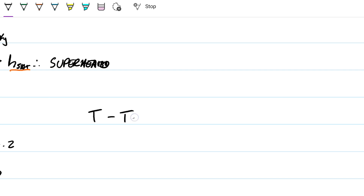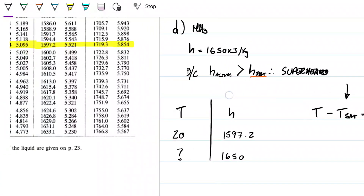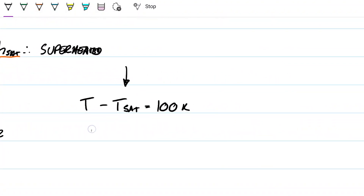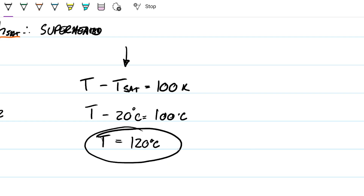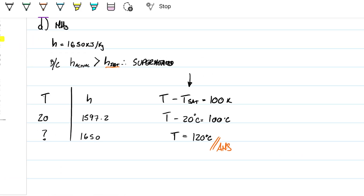So T minus T_sat equals 100 Kelvin. T_sat is 20°C, so T minus 20 = 100 Kelvin. Since this is a difference, Kelvin and Celsius are equivalent, so T = 120°C — meaning we are 100°C above the saturated temperature of 20°C. That's the initial answer for part D, though there is a small mistake here that we'll correct.